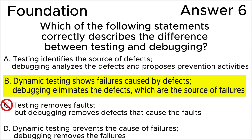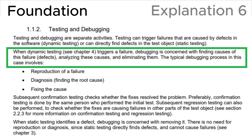Answer D is wrong because dynamic testing only triggers a failure or shows the presence of a defect — it does not prevent the causes of failures. Now let's look at section 1.1.1.2, 'Testing and Debugging,' in the ISTQB syllabus.